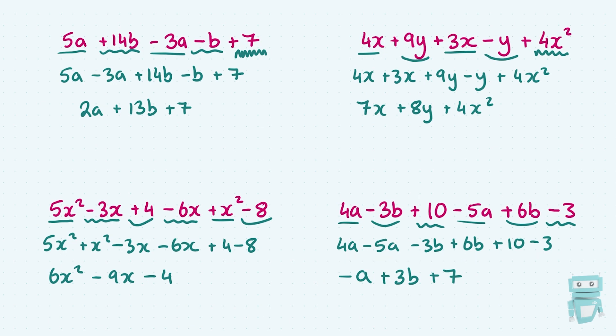So folks, what do we do to collect like terms? We can rearrange it and put the like terms together. The a's, the b's, and the constants, or the x's, and the x squareds, and whatever all together. And then we just tidy up accordingly. Make sure you bring your sign with you if and when you rearrange, and that you carefully add and subtract the terms. And that's all there is to it. Thanks for watching.